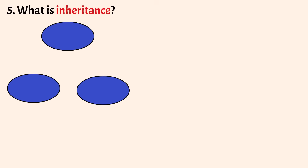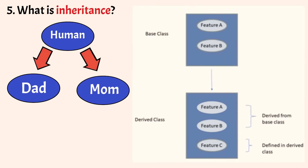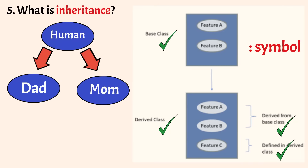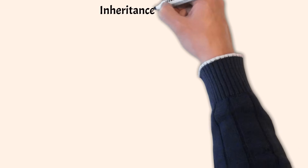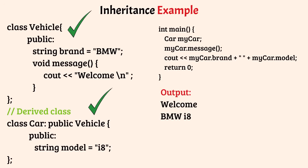What is inheritance? Inheritance is one of the core concepts of OOP. It is a mechanism where one class acquires the attributes and member functions of another class. The class which is inherited from is known as the base class, whereas the class that inherits from the base class is known as the derived class. Derived classes can inherit the characteristics of the base class and can also add new ones of their own. In order to inherit from another class, we use the colon symbol. Here we have an example where the vehicle is a base class and the class car is inherited from the base class vehicle.